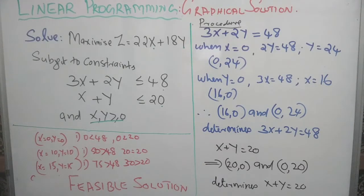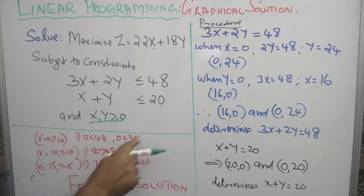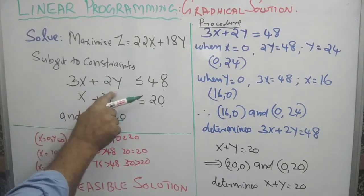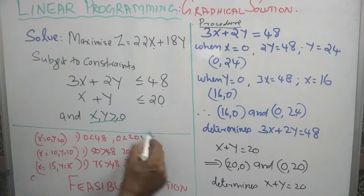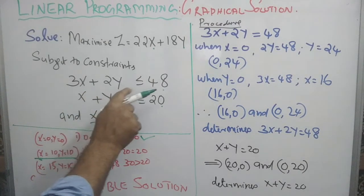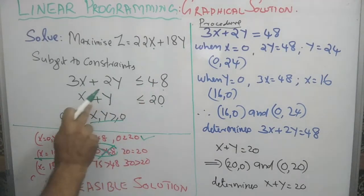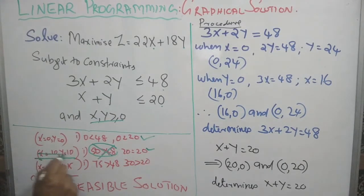As a simple illustration: when x equals 0 and y equals 0, x plus y equals 0 which is less than 20, and 3x plus 2y equals 0 which is less than 48 — so this is a feasible solution. When x equals 10 and y equals 10, 3x plus 2y gives 30 plus 20 equals 50, which is more than 48 — it is not feasible. Though 10 plus 10 equals 20 satisfies that constraint, the solution overall is not feasible.